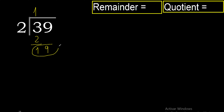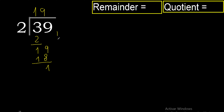19. 2 multiplied by 9 is 18. 19 minus 18 is 1. There is no number that goes down, therefore finish. Remainder is 1. Add quotient.